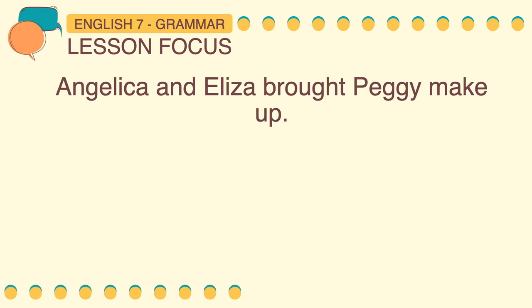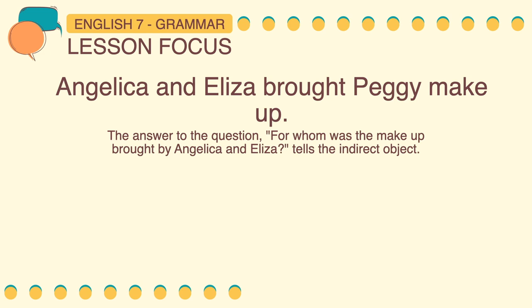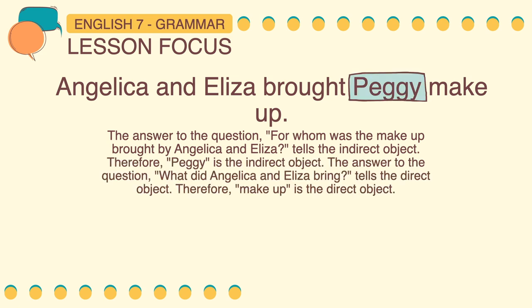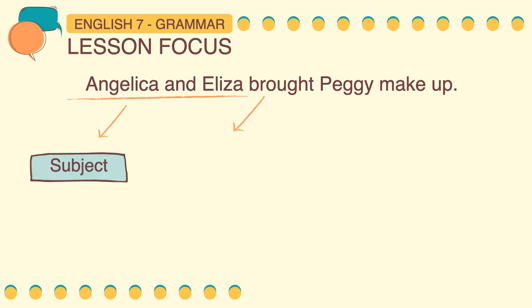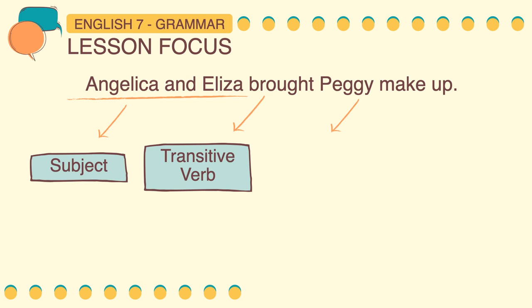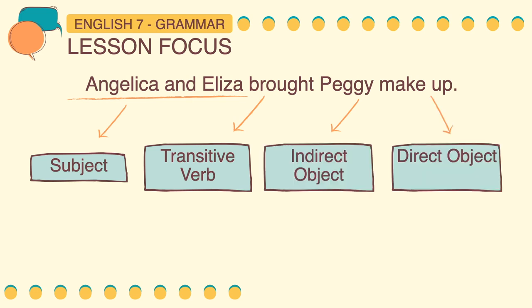Let's have another example sentence: Angelica and Eliza brought Peggy makeup. The answer to the question for whom was the makeup brought by Angelica and Eliza tells the indirect object. Therefore, Peggy is the indirect object. While the answer to the question what did Angelica and Eliza bring tells the direct object. Therefore, makeup is the direct object. Angelica and Eliza is the compound subject, brought is the transitive verb, Peggy is the indirect object, and makeup is the direct object.